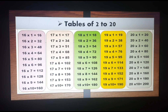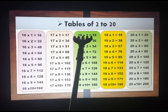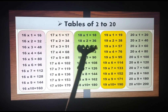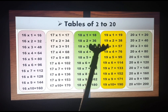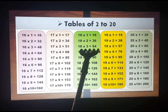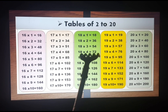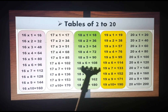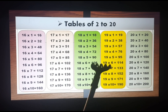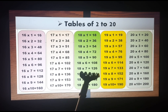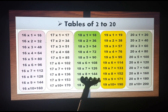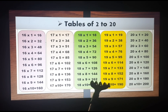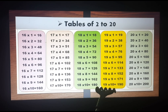I hope you are enjoying. Eighteen ones are eighteen, eighteen twos are thirty-six, eighteen threes are fifty-four, eighteen fours are seventy-two, eighteen fives are ninety, eighteen sixes are one hundred eight, eighteen sevens are one hundred twenty-six, eighteen eights are one hundred forty-four, eighteen nines are one hundred sixty-two, eighteen tens are one hundred eighty.